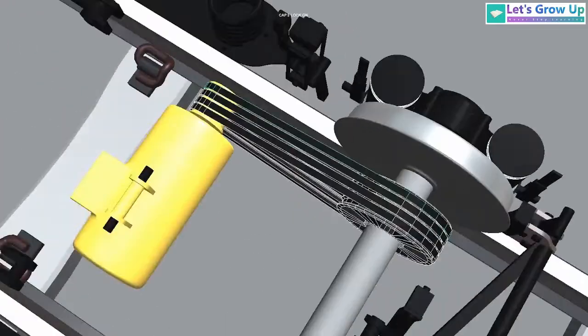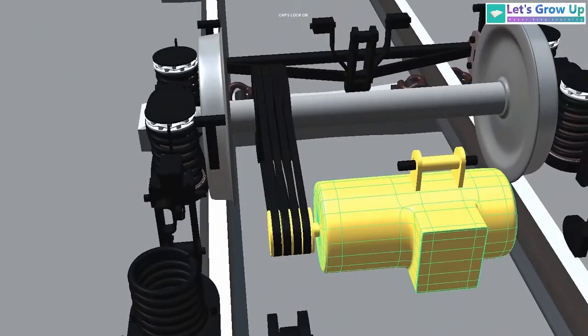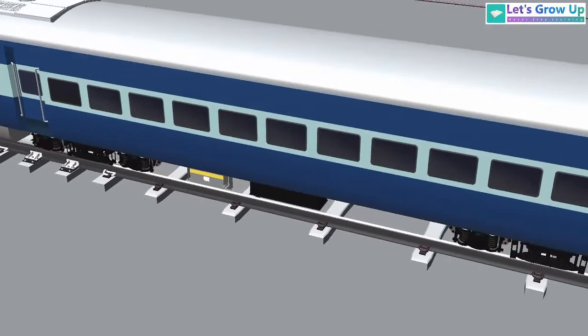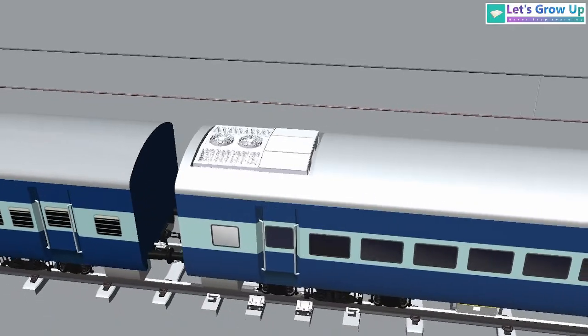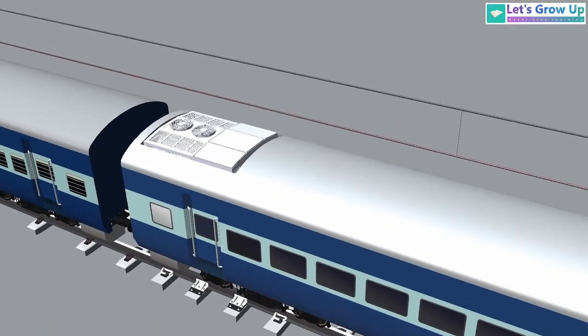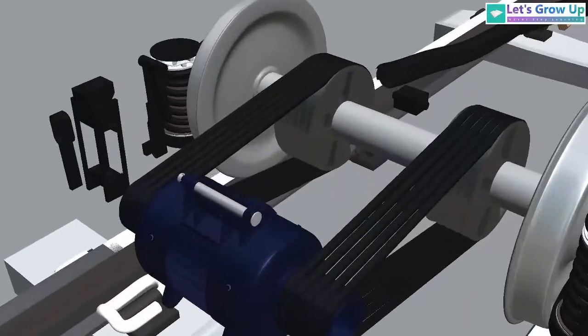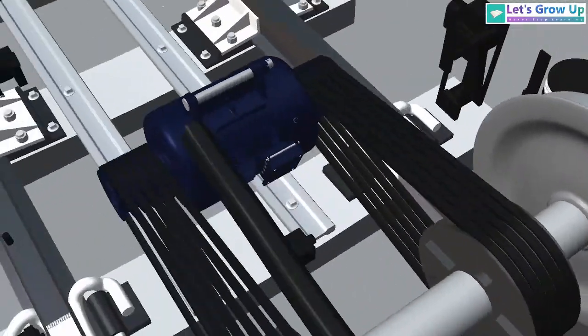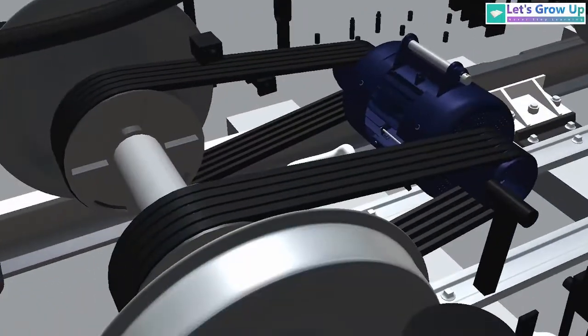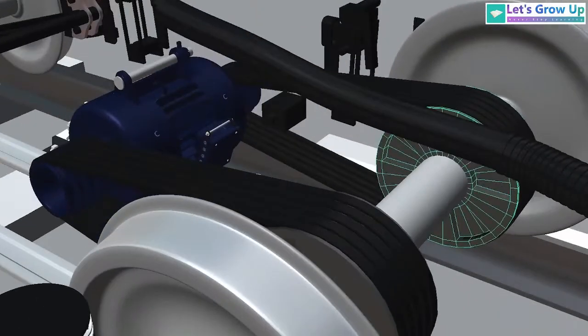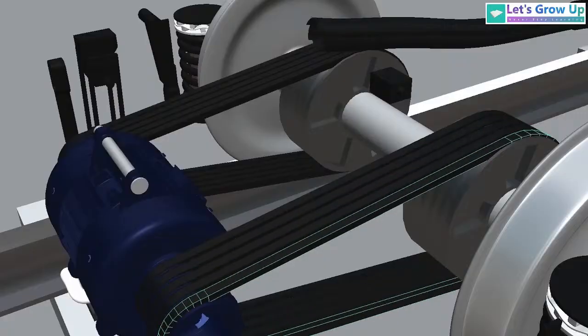which in turn spins the alternator to generate electricity. The AC coach is a different beast entirely. To power the RMPU, roof-mounted package unit air-conditioning system, the coach needs a massive amount of energy. These alternators are much larger and heavier. A typical self-generating AC coach is equipped with 225 kilowatt alternators to handle the heavy load.